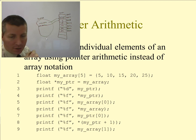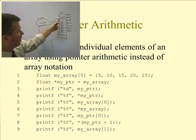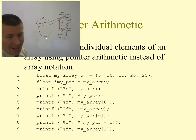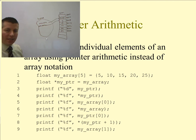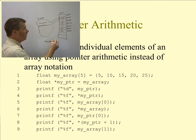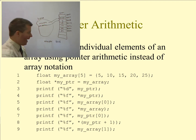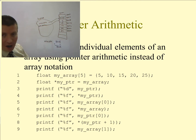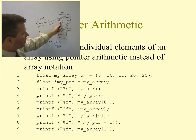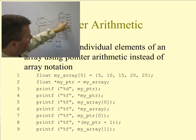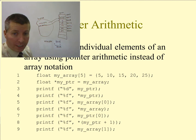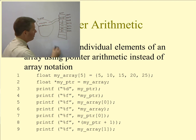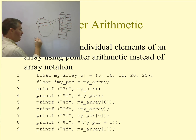Line 8 uses pointer arithmetic — the preferred way. I'm printing the dereference of myPointer plus 1. The current value of myPointer is 8008. If I naively added 1 I'd get 8009, but that's not what happens. Let me explain the problem: at location 8008 I have the value 5, but that float occupies 4 bytes — so locations 8008 through 8011 hold that single float value.